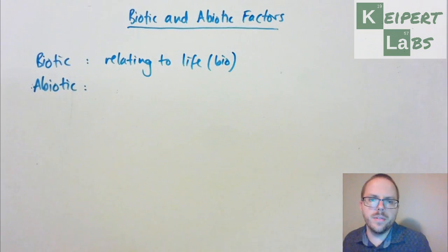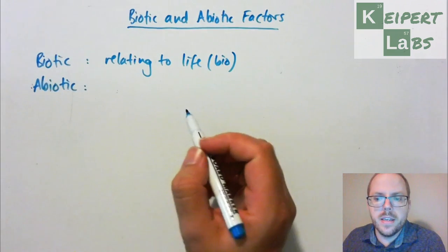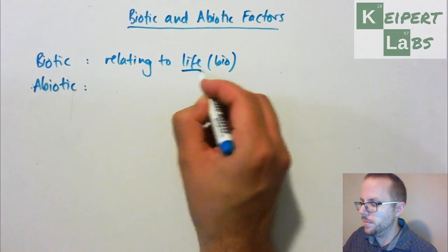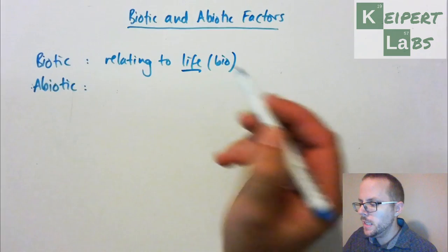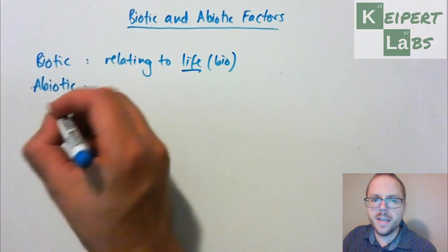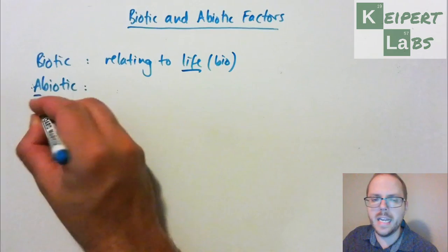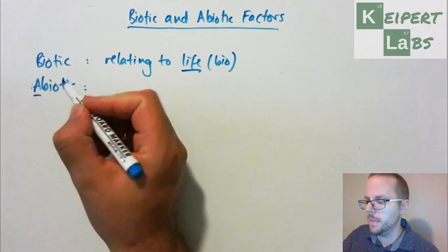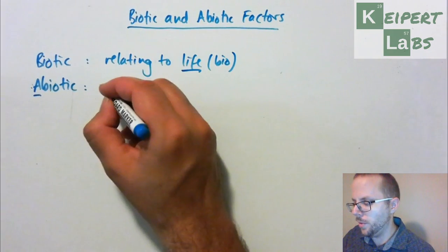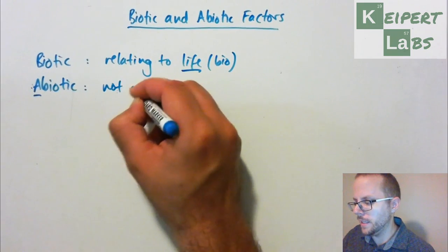Or biography, if we want to think in a non-scientific kind of way — so relating to life. And in Greek, which these words originally come from, when we use the letter 'a' in front of something it means the opposite — not relating to life.